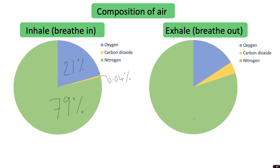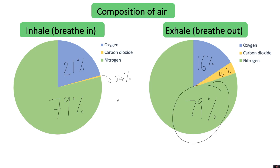When we breathe out, the composition changes — however not for nitrogen. Nitrogen stays at 79%, oxygen goes down to around 16%, and carbon dioxide goes up to around 4%. The reason nitrogen doesn't change is because our body doesn't use nitrogen. However, oxygen and carbon dioxide are the two gases involved in gas exchange in the respiratory system. Oxygen is diffused into the blood and used by the body, and carbon dioxide is the waste gas diffused from the blood back into the lungs and breathed out.